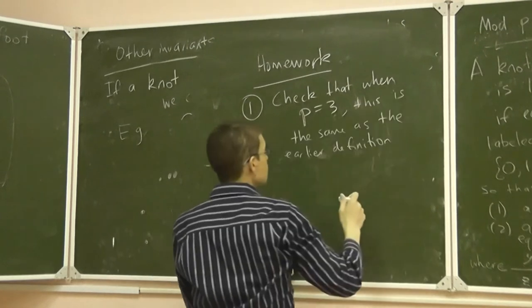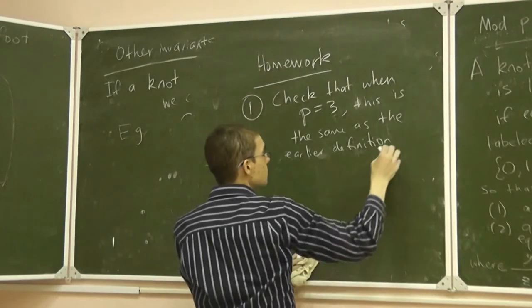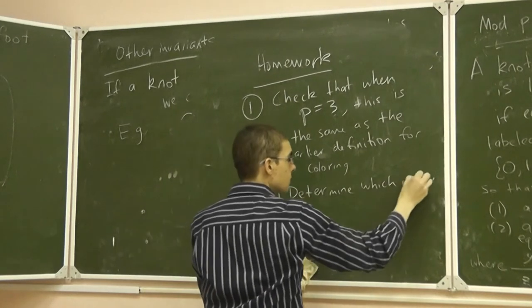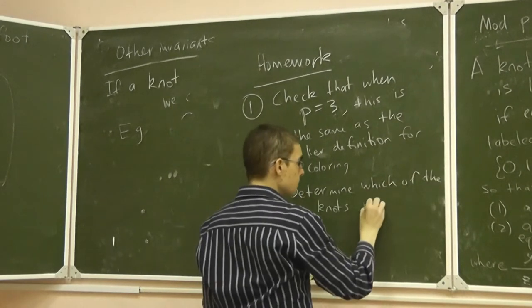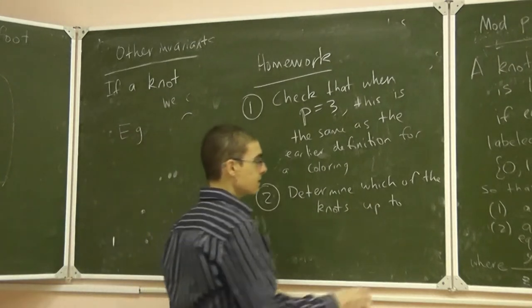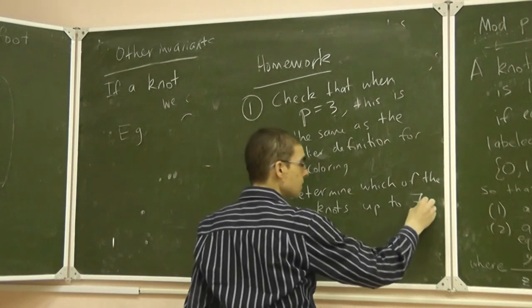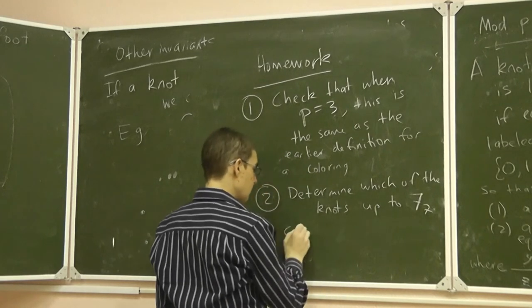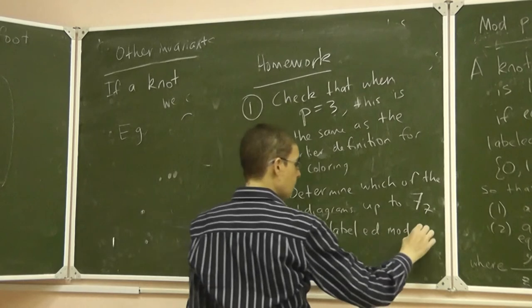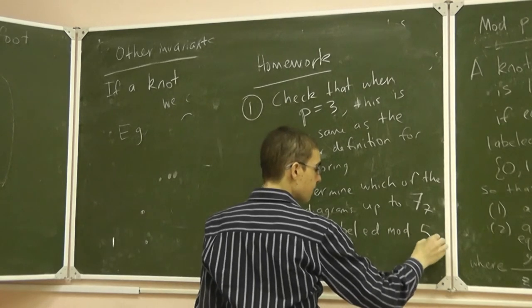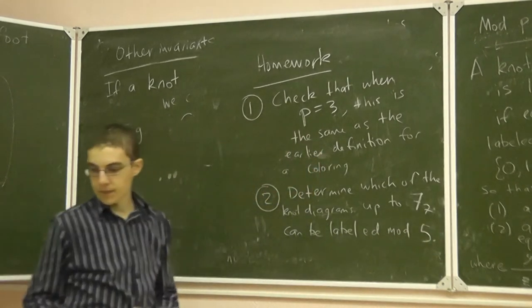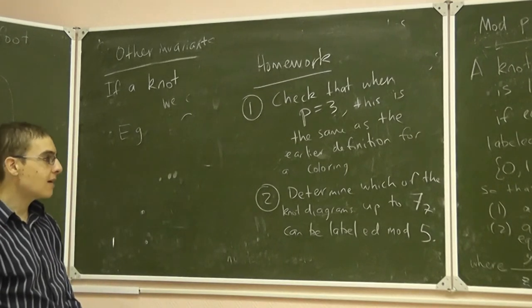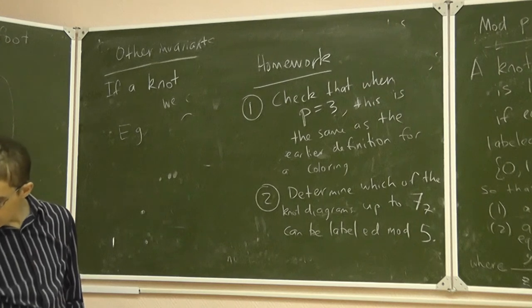To determine which of the knots up to 6, 7 can be labeled mod 5. So I'm leaving you with the same homework as last time, but now you are labeling mod 5.